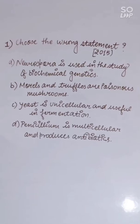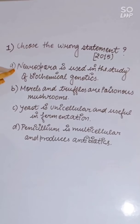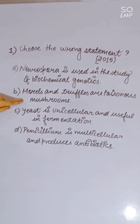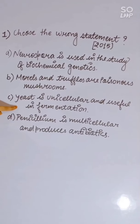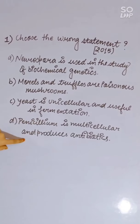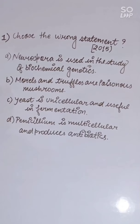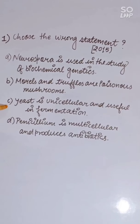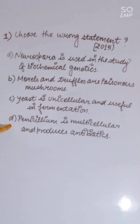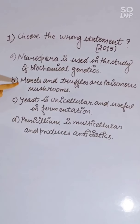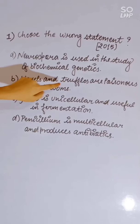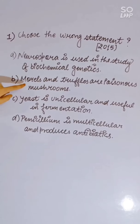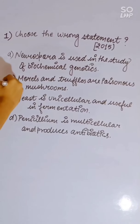NEET 2015 question: Choose the wrong statement. Options: Neurospora is used in study of biochemical genetics; Morels and truffles are poisonous fungi; yeast is unicellular and useful in fermentation; Penicillium is multicellular and produces antibiotics. The wrong statement is the second — morels and truffles are not poisonous; they are used as delicious food.